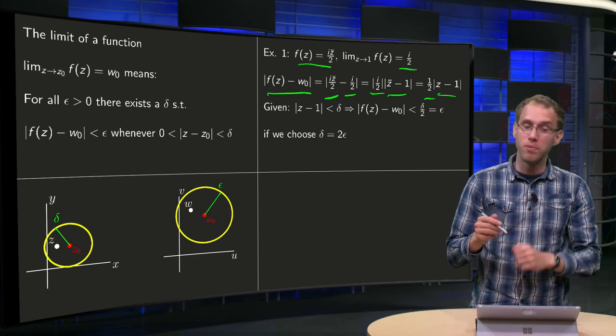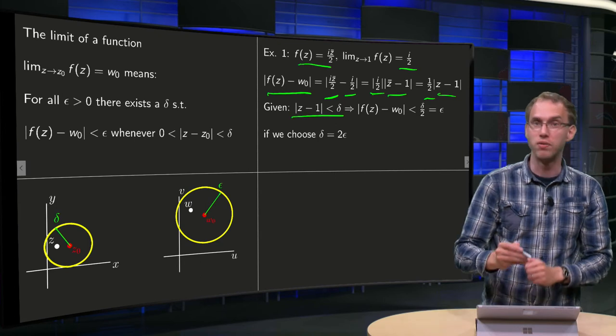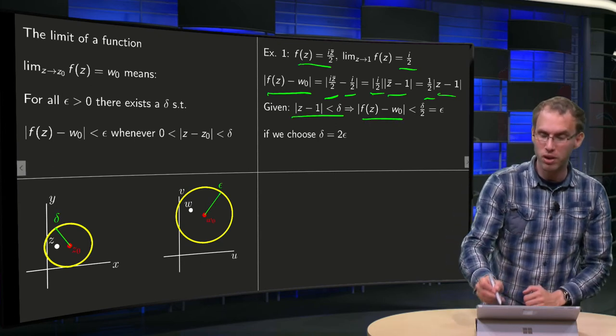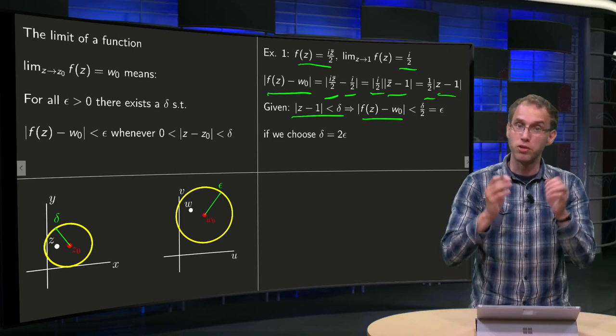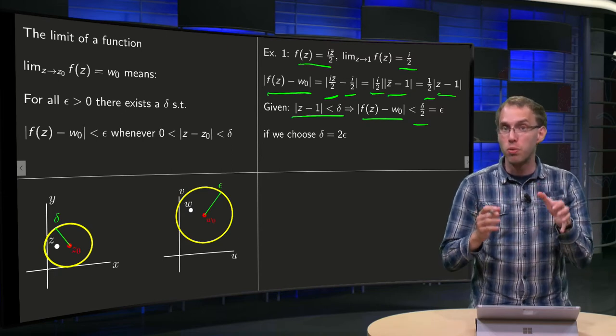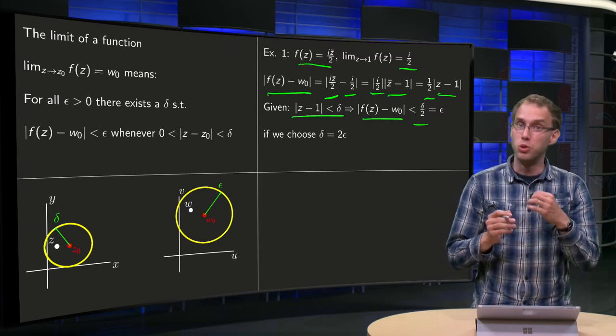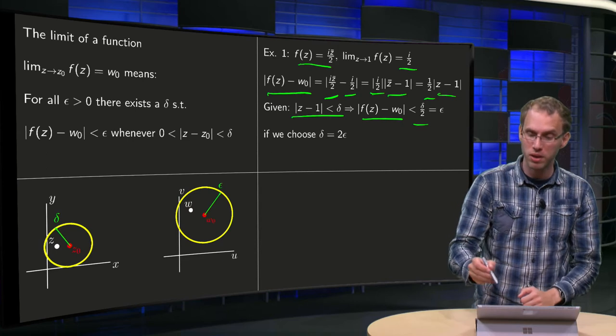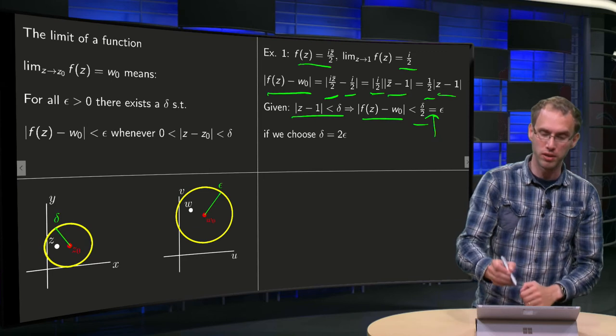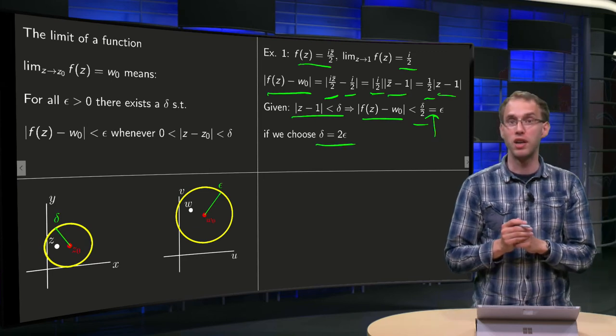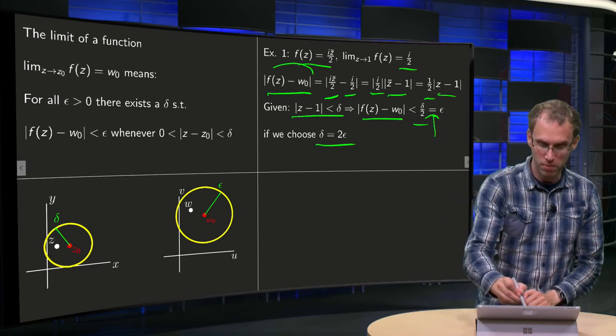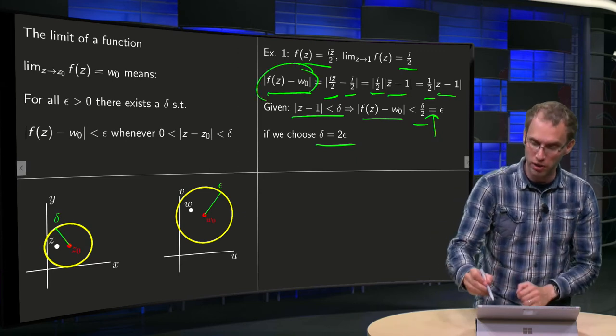Now you know that it is given that this modulus |z - 1| is smaller than δ, so you know that your modulus |f(z) - w₀| is smaller than δ/2. I want to get it smaller than ε, so what should you do? How should you choose your δ? You want the δ/2 to be equal to this ε, so you choose your δ equal to 2ε. If you choose this particular δ, then your |f(z) - w₀| will be smaller than ε.